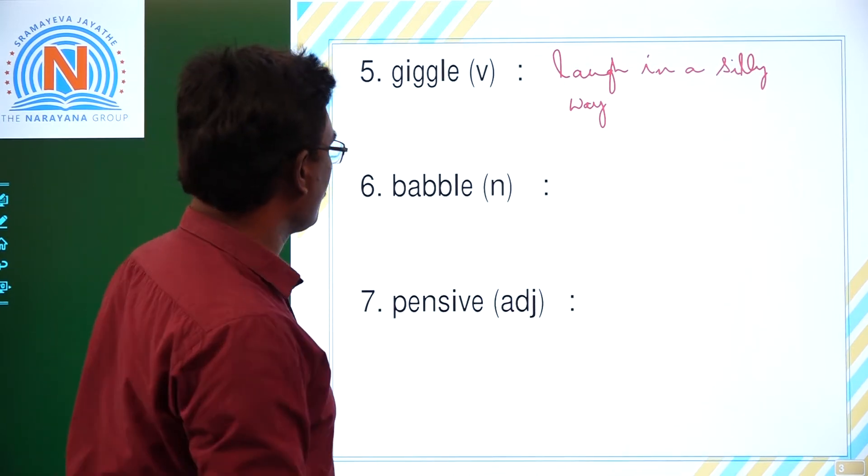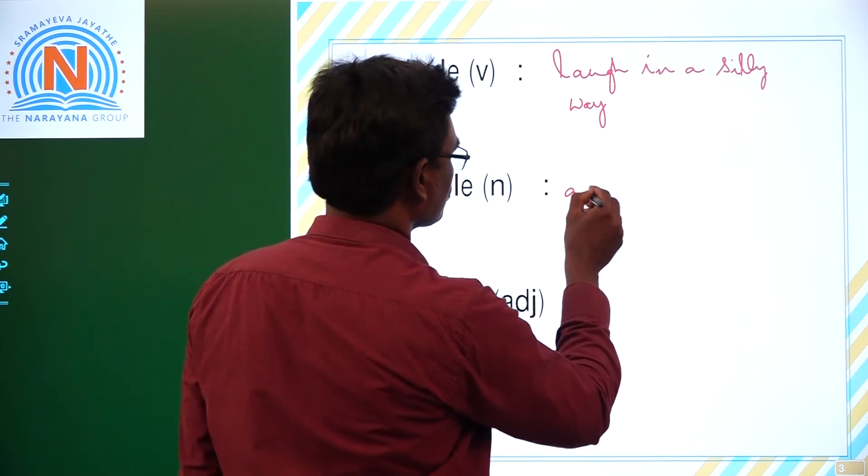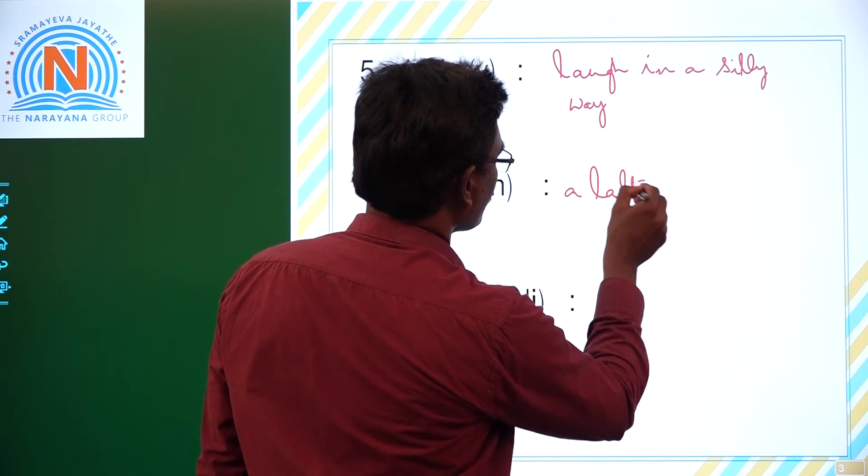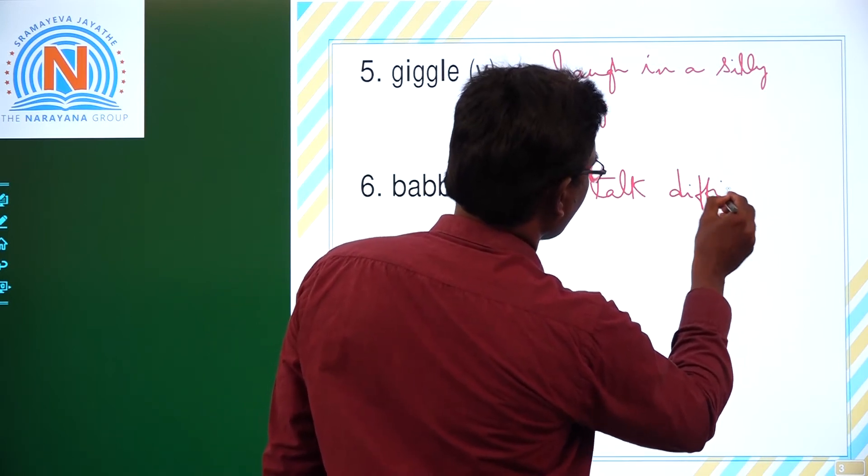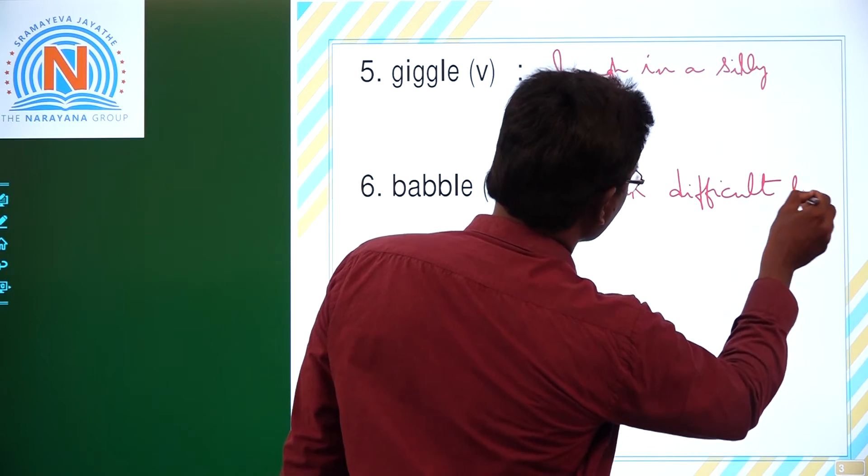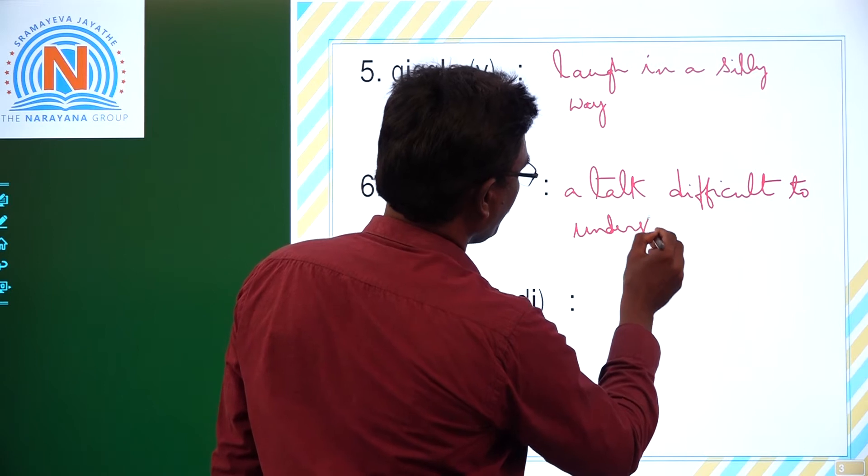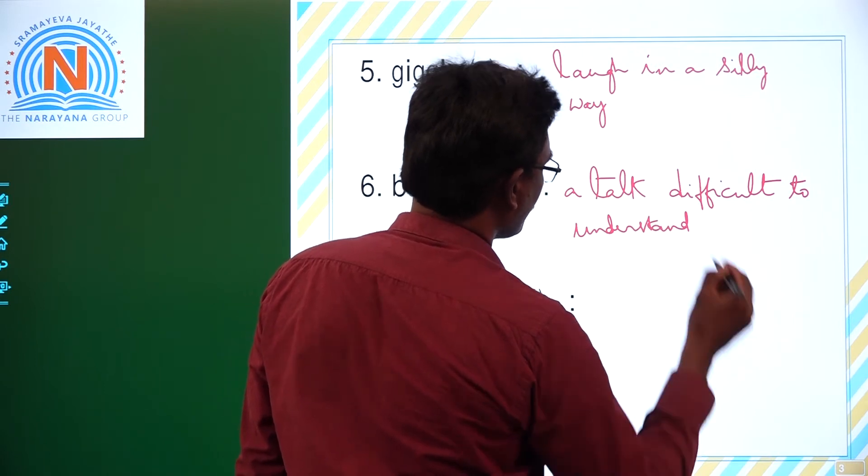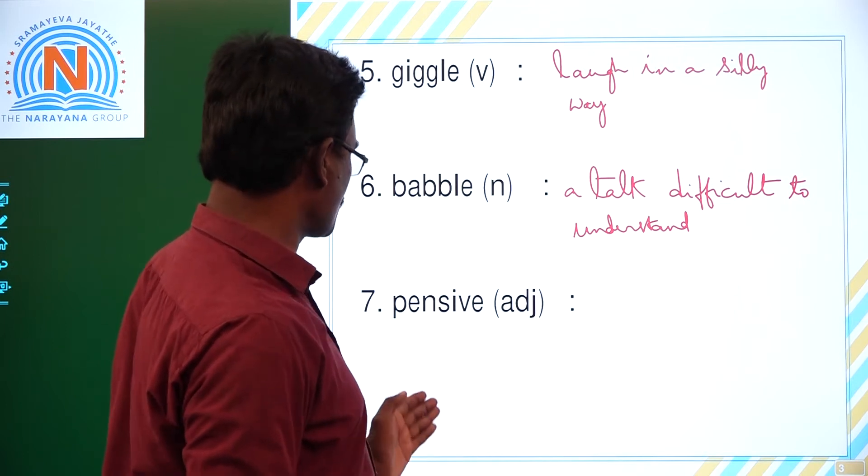Sixth one children, babble. Babble, so this is noun. A talk difficult to understand. Next one children.